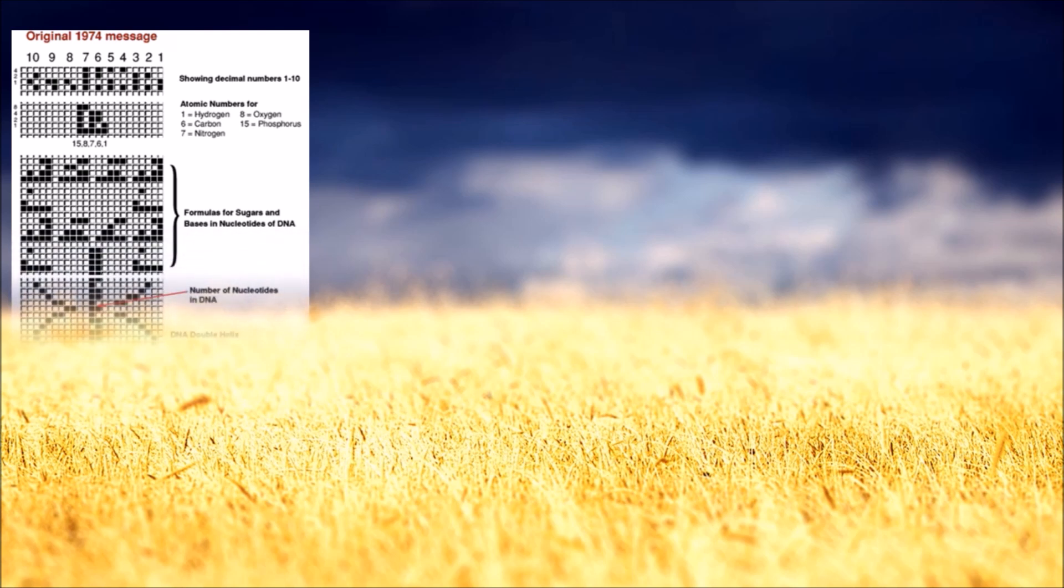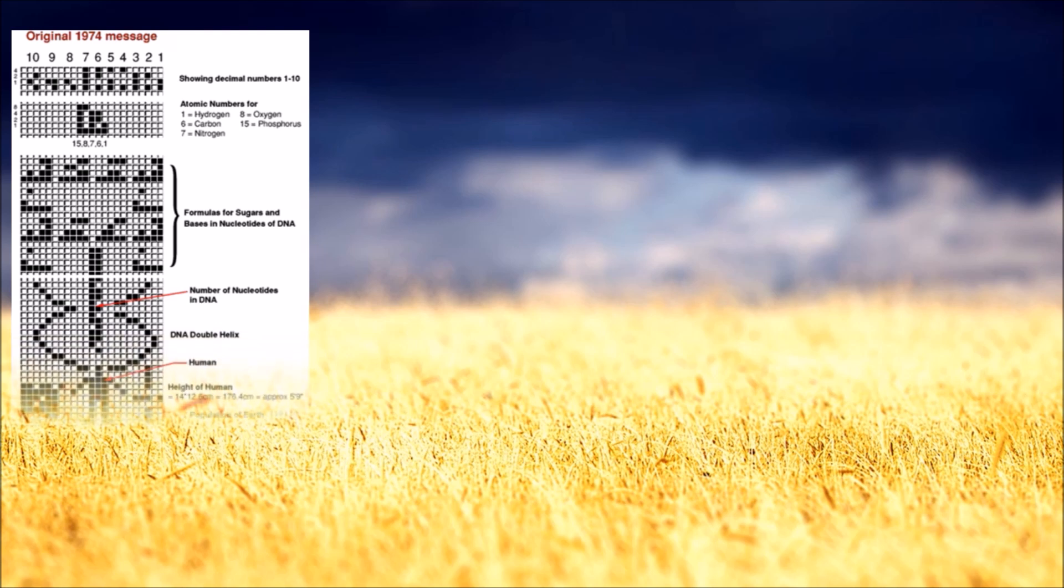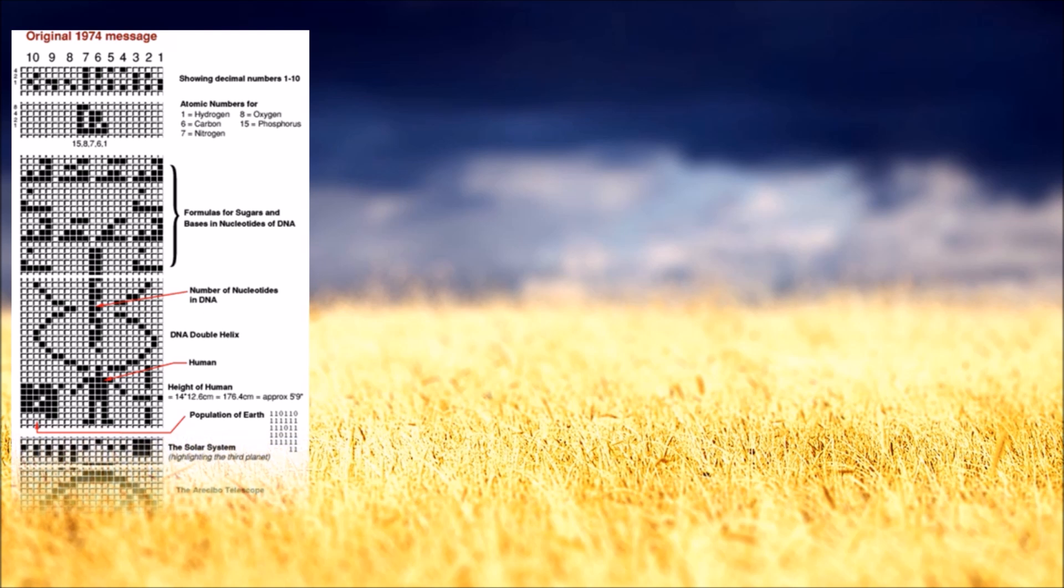Five, a graphic figure of a human. The dimensions are physical height of an average man, and the human population of Earth. Six, a graphic of the solar system indicating which of the planets the message is coming from. Seven, a graphic of the Arecibo radio telescope and the dimensions of the transmitting antenna dish.